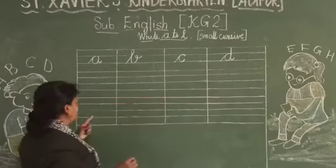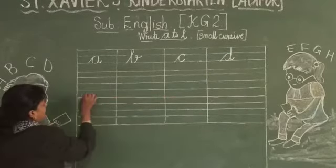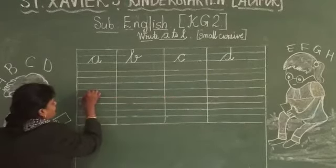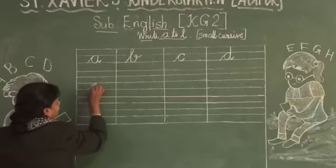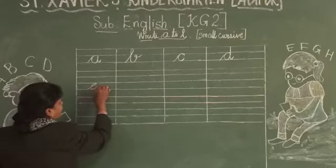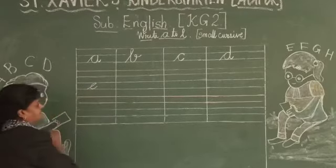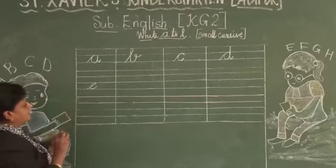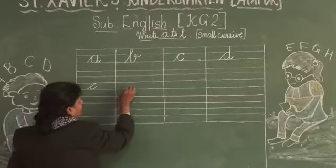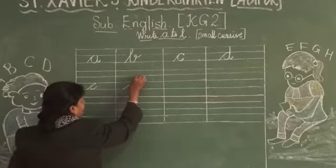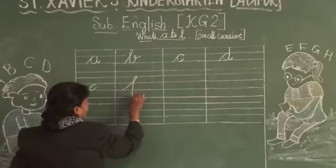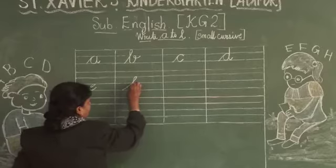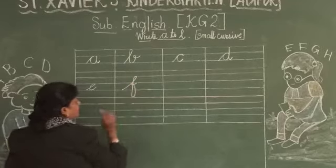After D, you will write E. Blue line to blue line. Then after E, F. F is for Fish.